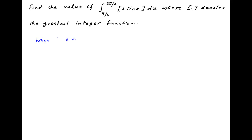We start by noticing that when x lies between the limits of integration, which are π/2 and 3π/2, the value of sin x will lie between minus 1 and 1. Multiplying by 2, this means that the value of 2 sin x will lie between minus 2 and 2.